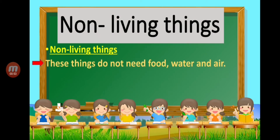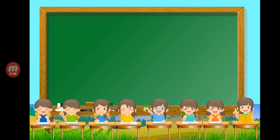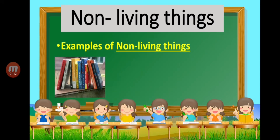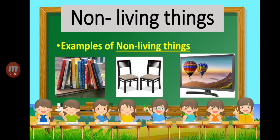Next, non-living things. These things do not need food, water, and air, and they do not have the ability to reproduce or give birth and grow. Examples are books, chairs, and television. All of these are examples of living and non-living things.